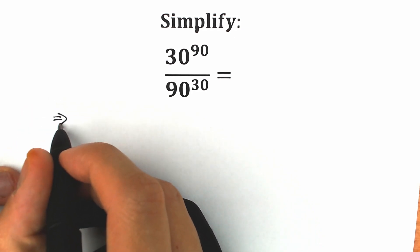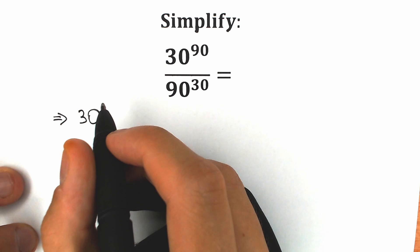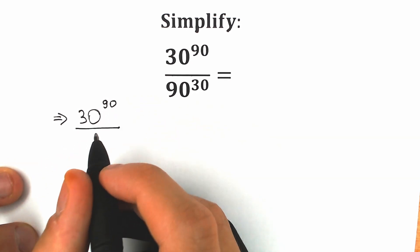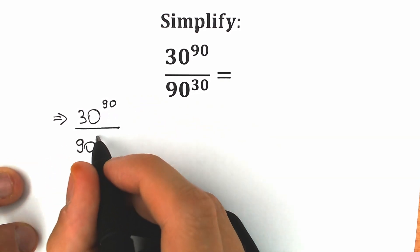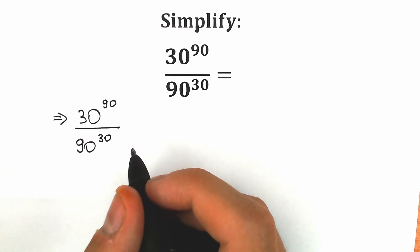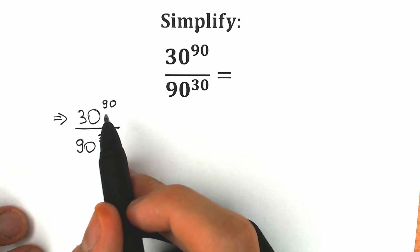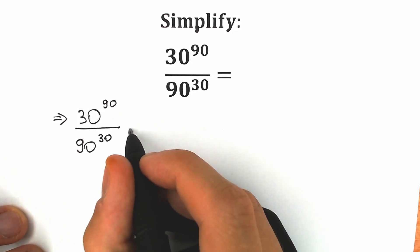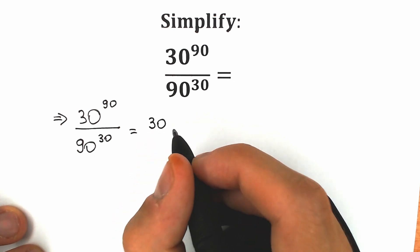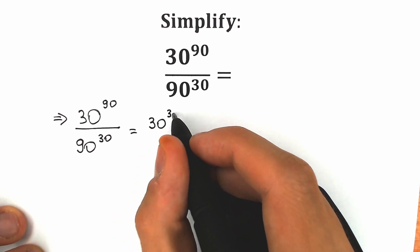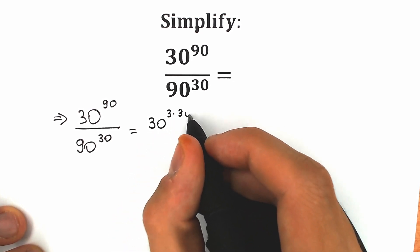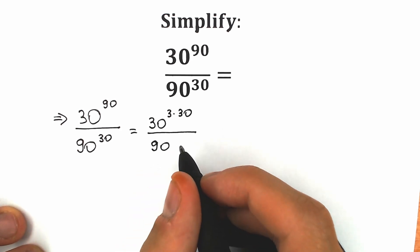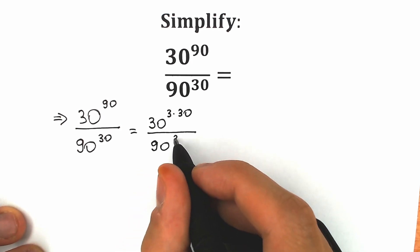So let's start solving from the left side. We have 30 to the 90th power, and we divide it by 90 to the 30th power. First of all, let's write this 90 as 3 times 30. So we have 30 to the power 3 times 30, divided by 90 to the power 30 — same denominator.